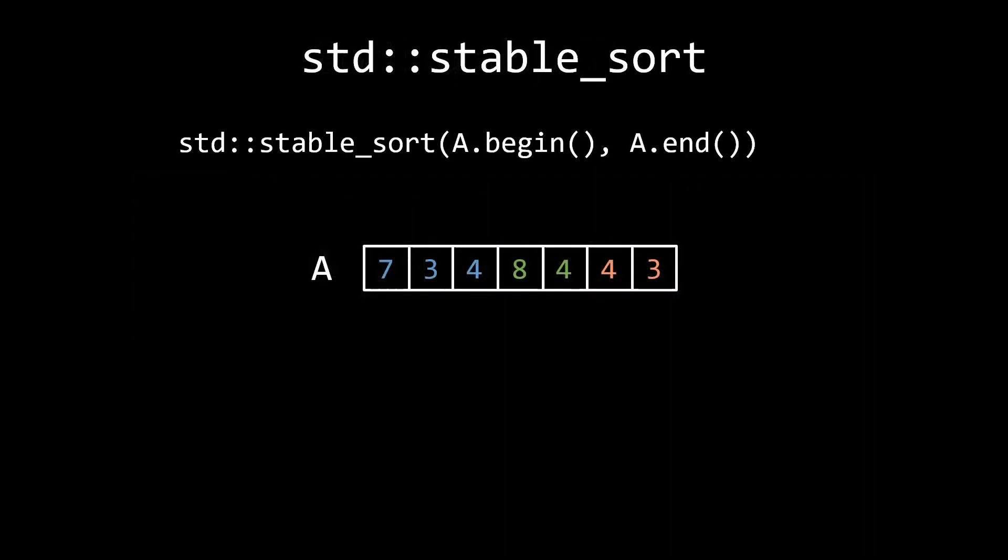The second sorting algorithm of today is the stable sort. As the name suggests, it performs a stable sort, which is a sort that preserves the relative order of elements that compare equally. To demonstrate this, I have colored the integers in A.